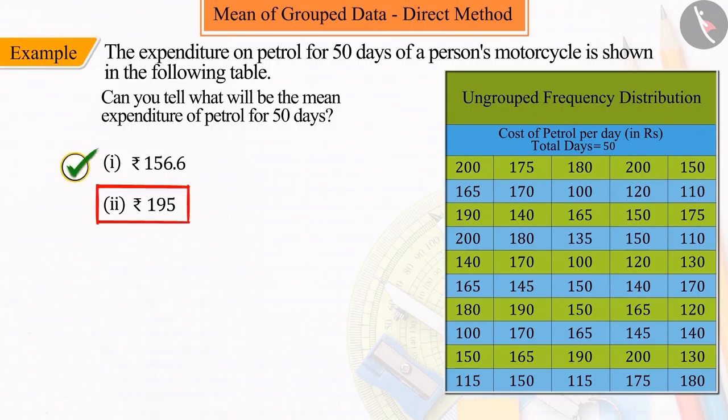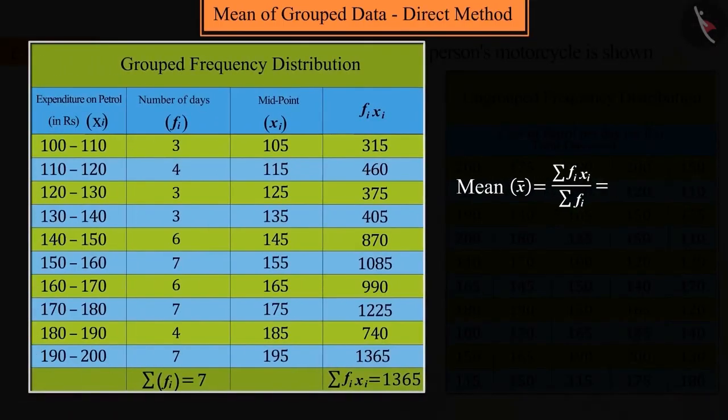If you have selected option 2, then it's a good try, but this is an incorrect answer. Because while finding the value of mean, you have not taken the values of summation of f_i x_i divided by the summation of f_i. Instead, you have taken the maximum value of f_i x_i, which is 1365, and the value of the corresponding f_i, which is 7. On solving this, we get 195.